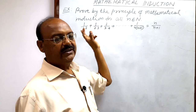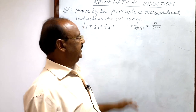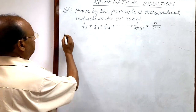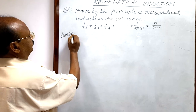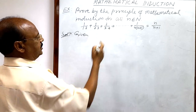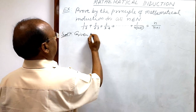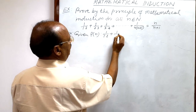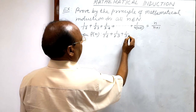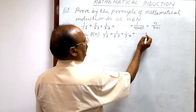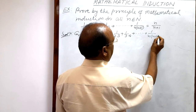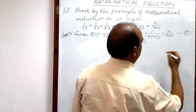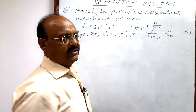The total number of terms on the left hand side is n. This is the mathematical statement P(n) and we have to prove it. P(n) is: 1/(1×2) + 1/(2×3) + 1/(3×4) + ... + 1/(n×(n+1)) = n/(n+1). This is relation number 1, and we have to establish it.